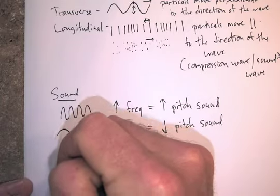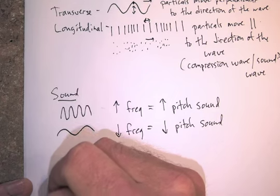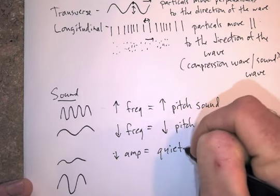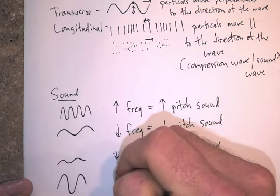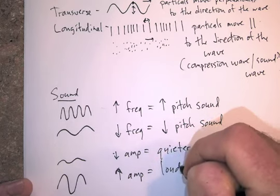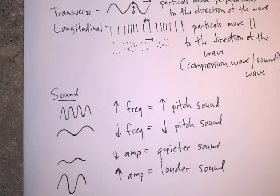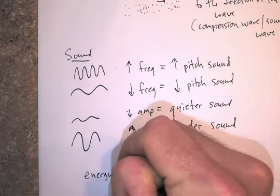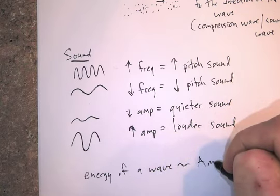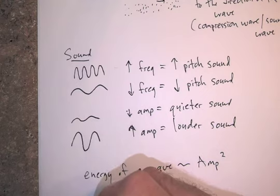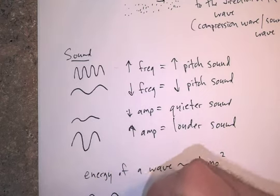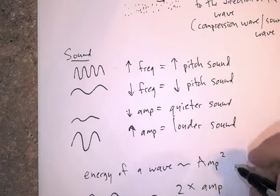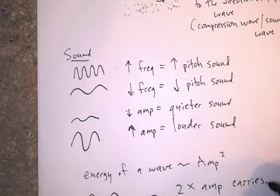The other thing is amplitude. If you have a low amplitude versus a high amplitude, low amplitude is going to be a quieter sound, and high amplitude is a louder sound. The energy of a wave is actually proportional to the amplitude squared. So if you've got a wave with two times the amplitude — say you've got a wave, and then another wave that's half the amplitude — two times the amplitude carries four times the energy.